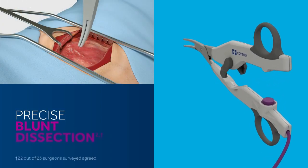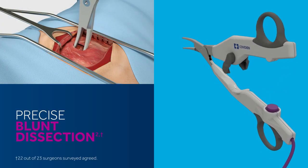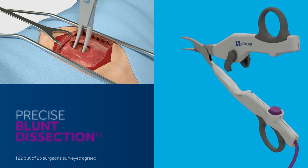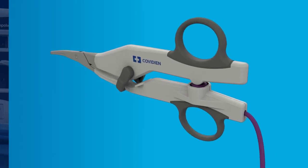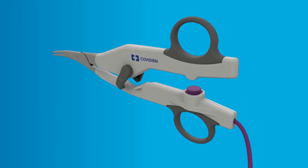Precise blunt dissection is achieved by the slim symmetric jaw design, and it is powered by the FT10 or LS10 energy platforms so it seamlessly integrates into your current workflow.